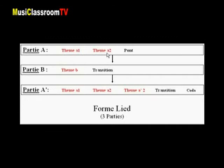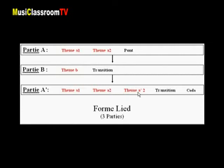L'exposition de ce premier thème est suivie d'un pont, ou donc d'une transition, qui nous mène à la partie B qui inclut le second thème. Ce thème B est lui-même conclu par une transition qui ramène la partie A, que nous avons nommée ici A', parce que légèrement variée par rapport à la première exposition. Cette partie A' est donc une véritable réexposition du thème A avec ses deux éléments, suivie d'un commentaire du second élément A2, nommé ici A'2 au piano notamment, qui est une variation ornementale du thème A2.